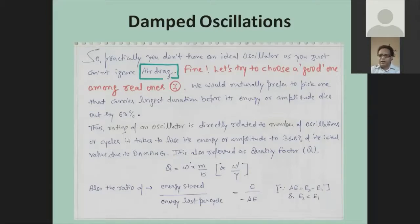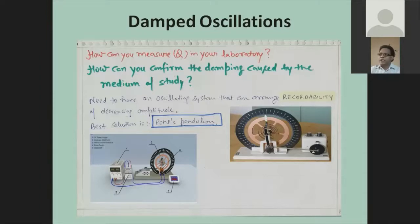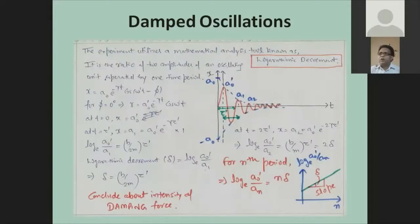The answer to choosing the best oscillator from all these damped ones is given by the quality factor — the ratio of energy stored in an oscillator to the amount of energy lost per cycle. If we can reduce the energy lost per cycle, we can have an oscillator that runs infinitely; otherwise it must die. We measure the quality factor in the lab using the Pohl's pendulum, which makes all these dying oscillations recordable.